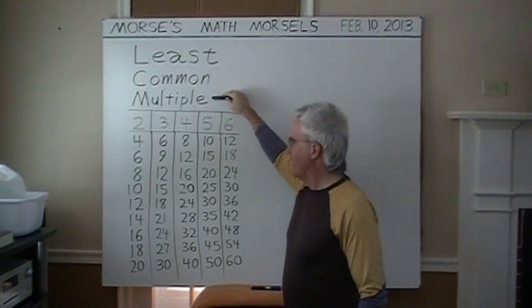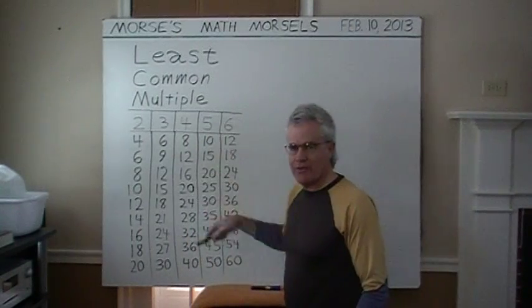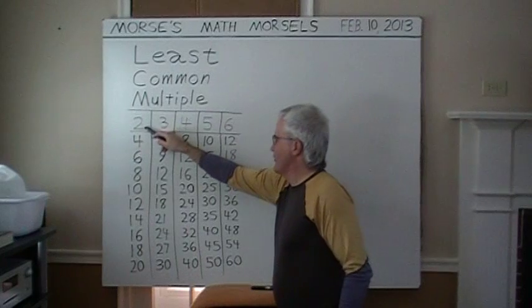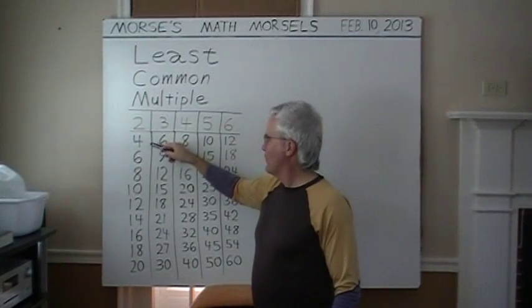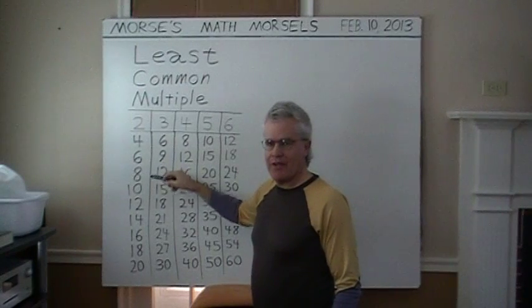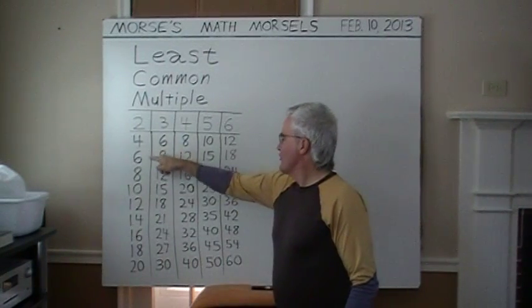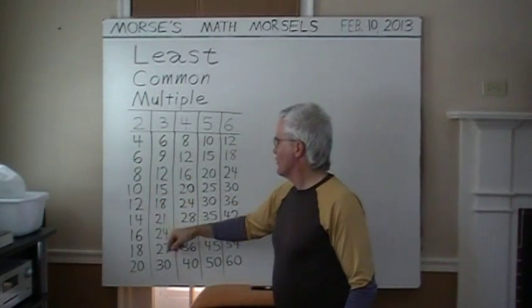I've listed multiples from the familiar times tables. For example, two. This is a two times table, and its multiples include four, six, eight, ten, and twelve. Notice that I'm adding two to each number to get the number beneath, generating the multiples.